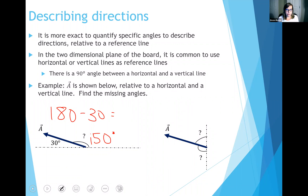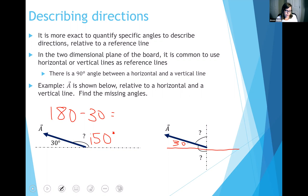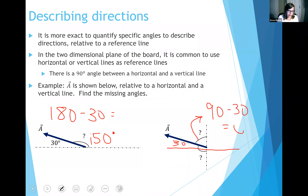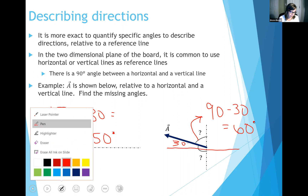Now, let's say we want to reference vector A with respect to a vertical line. We know vector A made a 30-degree angle with the horizontal line. Since horizontal and vertical lines are 90 degrees from each other, we can solve for the angle between vector A and the vertical line: 90 minus 30 degrees gives us 60 degrees.